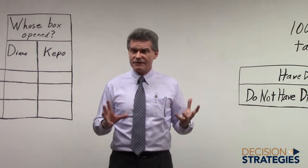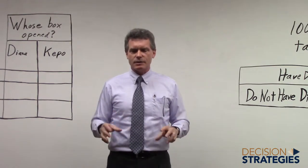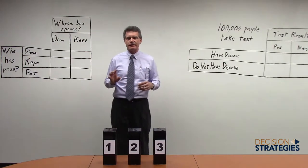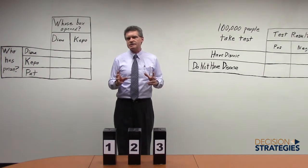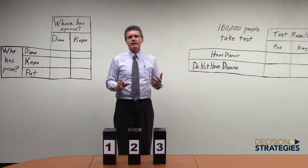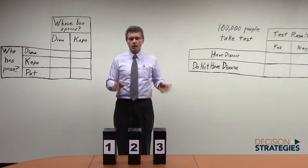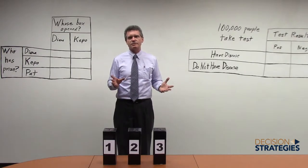For those of you who are not familiar with the game show host problem, the problem is set up this way. There are three boxes, one of which contains a valuable prize. The usual way that the problem is set up is there's one contestant, and the contestant chooses a box, and then the game show host, who knows where the prize is, reveals that one or the other of the game show host's boxes is empty. And of course one of them has to be empty, at least one of them has to be empty.